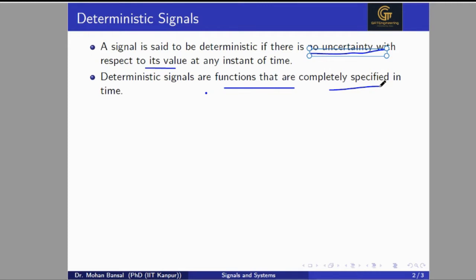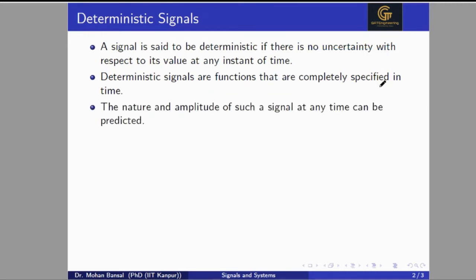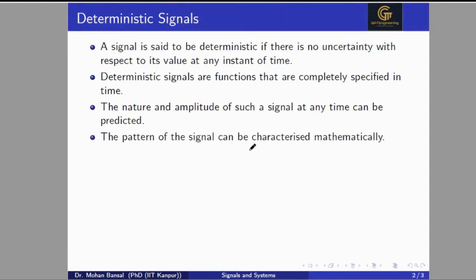The signal will be called deterministic if we can predict the value at any time instant. The pattern of signals can be characterized mathematically. We can characterize the signal mathematically — for example, A sin(ωt) is a deterministic signal. We can write it mathematically.